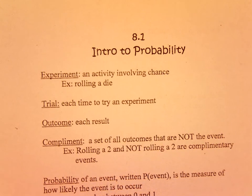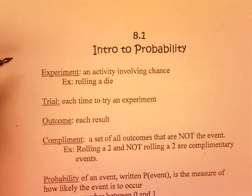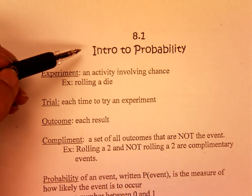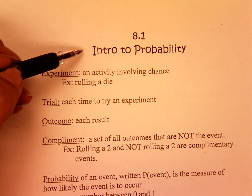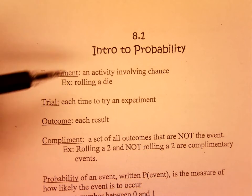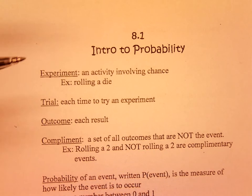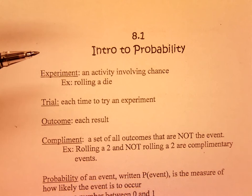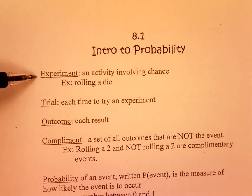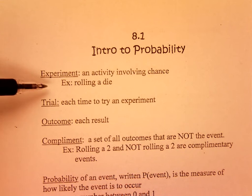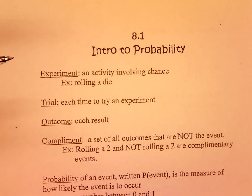Today's lesson is 8.1, Introduction to Probability. All of Chapter 8 has to do with probability. Probability has to do with what is your chance of winning or losing a game. An experiment is an activity involving chance. Examples would be rolling a die, flipping a coin, or playing rock, paper, scissors.